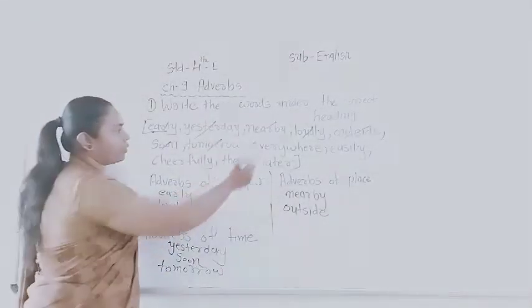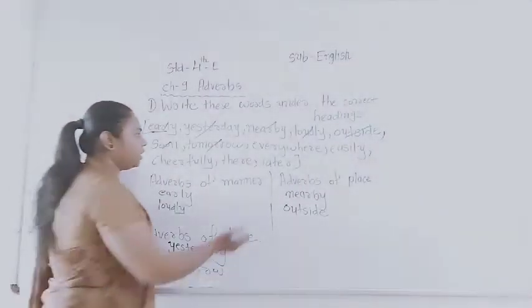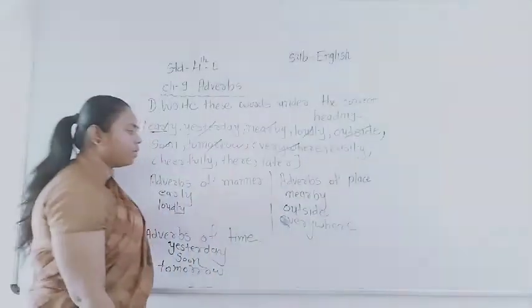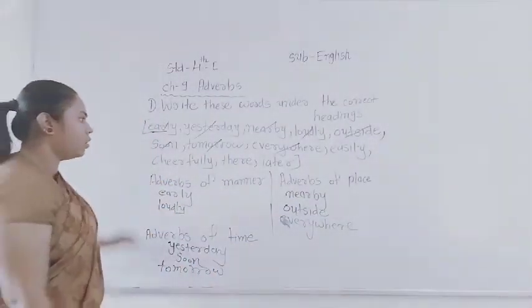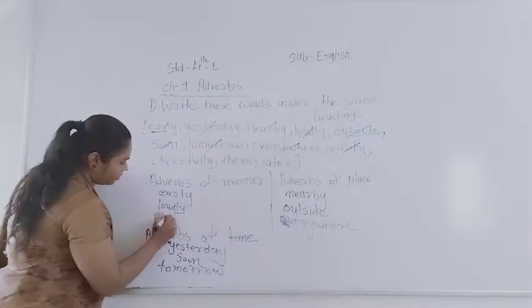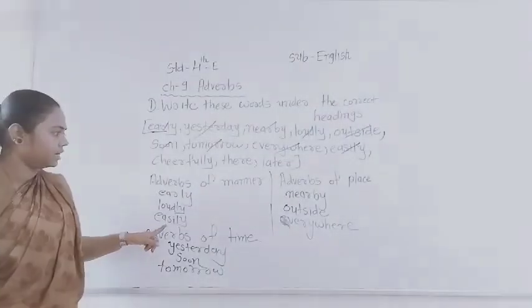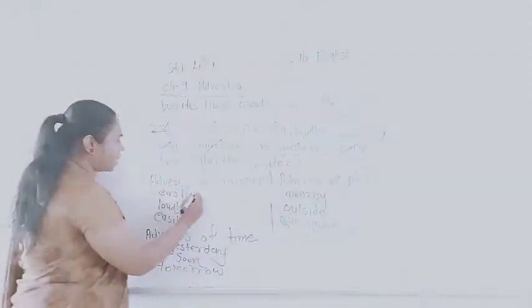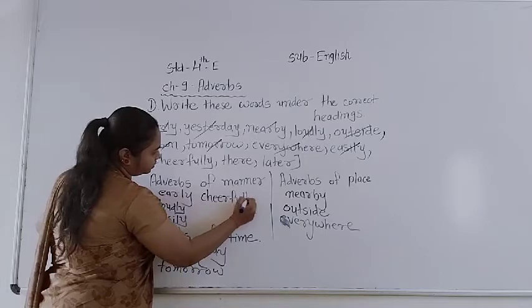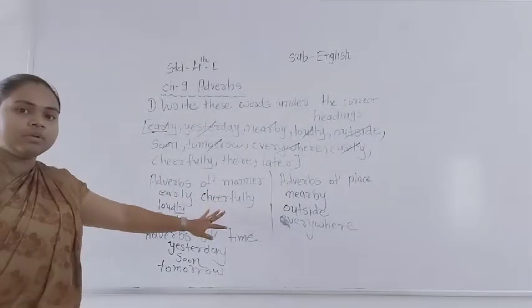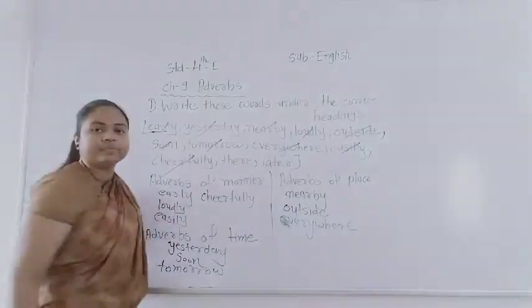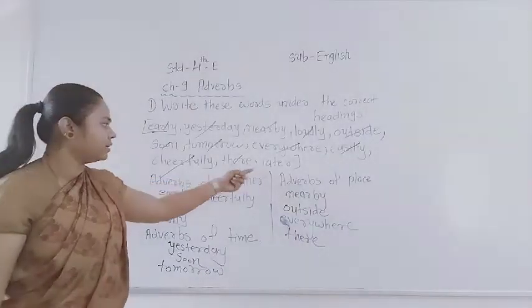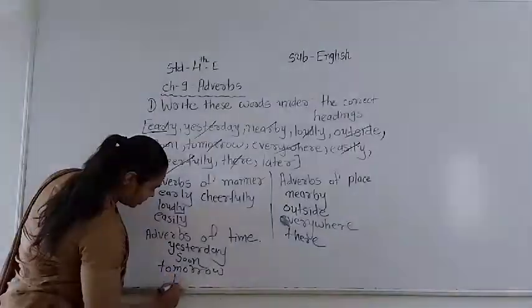Then 'everywhere' — everywhere is place, so we will write here under adverb of place. Now 'easily' — easily is an adverb of manner, so we will write under adverb of manner. Then 'there' — there is a place, so we will write here. And 'later' — later is describing time, so we will write here.